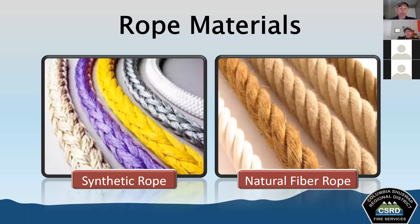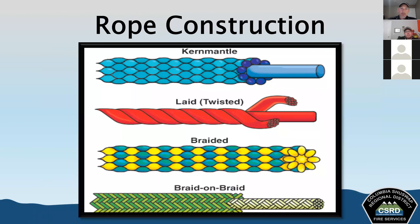Natural fibers include things like manila, cotton, and hemp. Advantages of natural fiber ropes include resistance to sunlight, they do not melt when exposed to heat, and they hold knots very firmly. Disadvantages include being prone to mildew and mold, deteriorating when exposed to chemicals, and when they come into contact with embers or direct flame they will actually catch fire and burn.